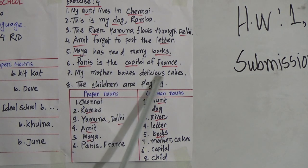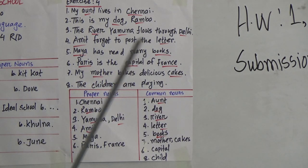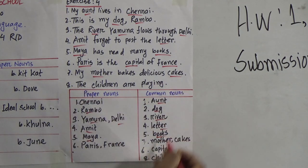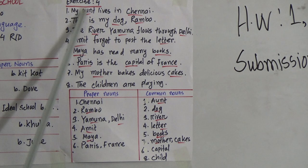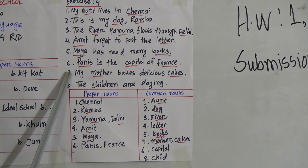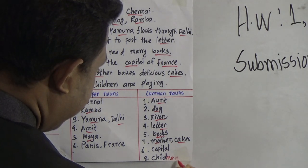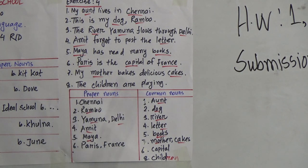Number seven: My mother bakes delicious cakes. Mother and cakes — is there any specific name of your mother or my mother? No, there is no specific name. So it would refer to all mothers. So mothers and cakes would be common nouns. Number eight: The children are playing. The children means all the children, so the children would be a common noun, because there is no specific name.